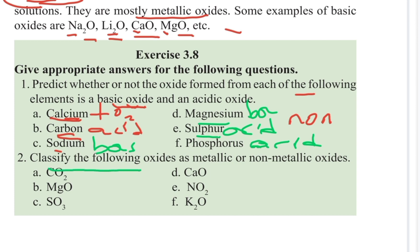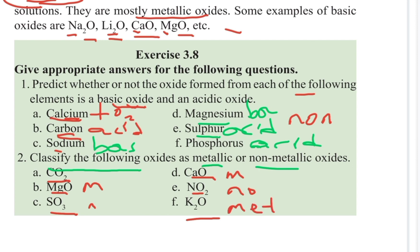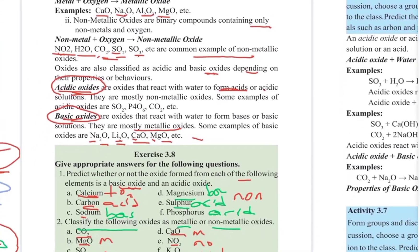The following oxides are metallic. Carbon is a non-metal. Magnesium oxide — magnesium is a metal. The metallic oxide is a metal. The sulfur in carbon dioxide is non-metal. Calcium is a metal oxide. The potassium is a metal.